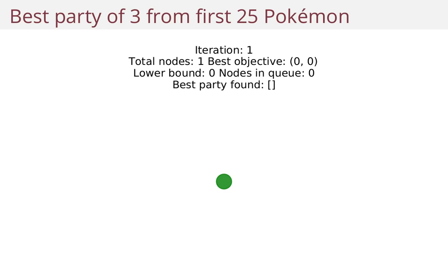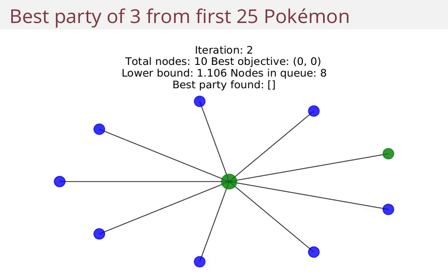Let's simplify things and assume that we want to pick the best party of three Pokemon from the first 25 Pokemon. We start with a root node — this is just an empty party — and we branch.